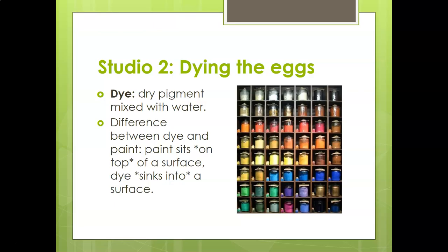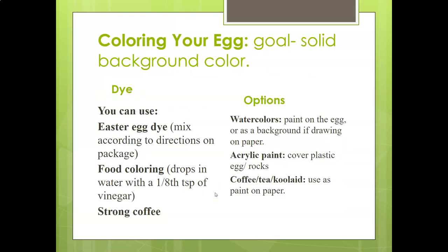There are dry pigments for dye that you measure out and mix together to get your colors. When you're coloring your egg, your goal is to get a solid background color. You can use the Easter egg dye mix that is commercially available, mixed according to the directions on the package — it usually calls for a little bit of water and some vinegar.